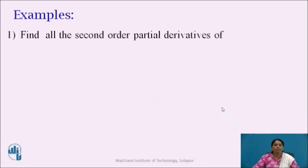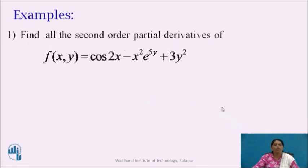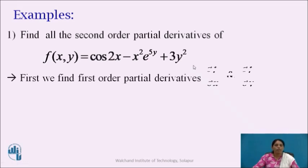Now, let us go for the examples. First example: find all the second order partial derivatives of f(x,y) = cos(2x) − x²e^(5y) + 3y². First, we find the first order partial derivatives, that is ∂f/∂x and ∂f/∂y, by differentiating f partially with respect to x as well as y.